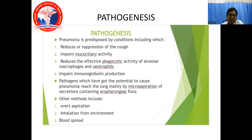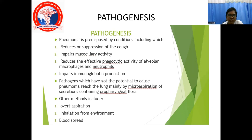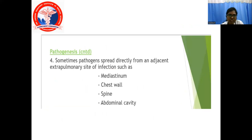Pathogenesis of pneumonia: pneumonia is predisposed by conditions which reduce mucociliary activity, impair the effective phagocytic activity of alveolar macrophages and neutrophils, and impair immunoglobulin production. Pathogens which have the potential to cause pneumonia reach the lung mainly by microaspiration of secretions containing oropharyngeal flora. Other methods include overt aspiration, inhalation from the environment, and blood spread. Sometimes pathogens spread directly from an adjacent extra-thoracic site of infection such as the mediastinum, chest bone, spine, and abdominal cavity.